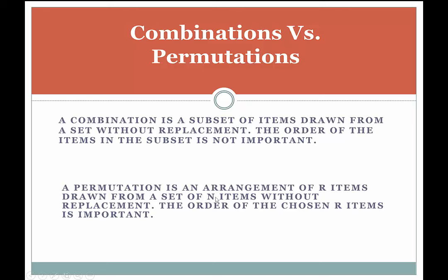It's very similar in that you have a set of items and you're taking some subset from there. Once you have that subset, when talking about a permutation, you count how many different ways you can arrange the items you've selected. Whereas with a combination, you're done once you've selected them — that counts as just one combination.